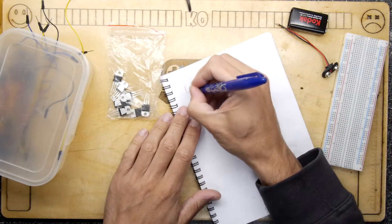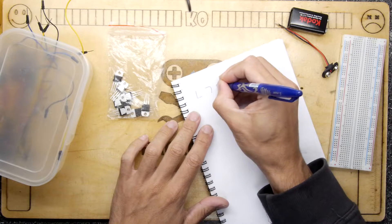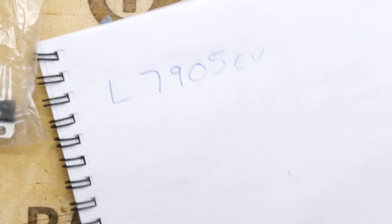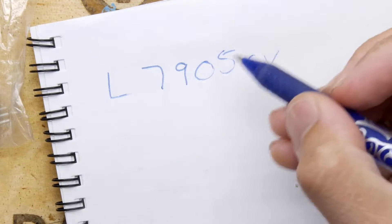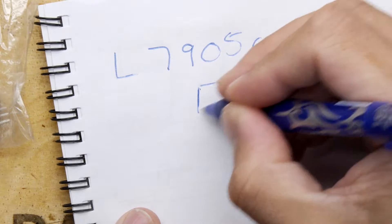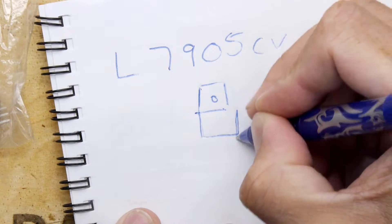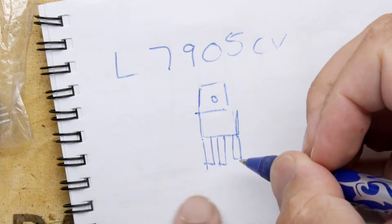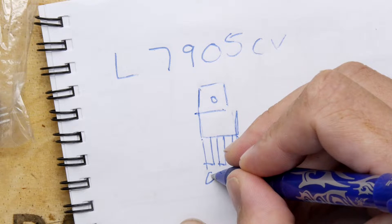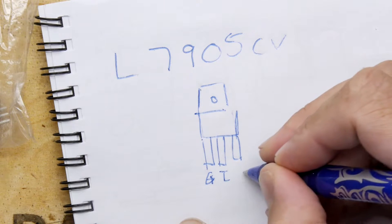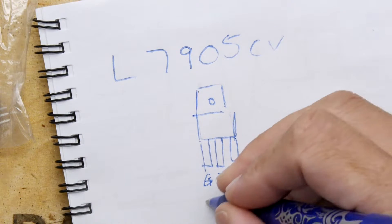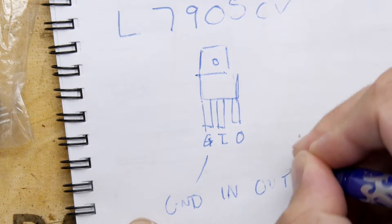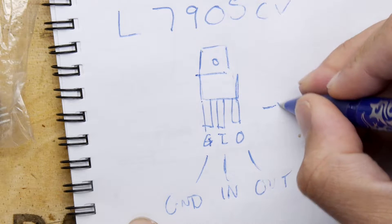To do this I'm going to use one of these, which is an L7905, particularly this one CV. I'll have to zoom in because my pen is running out. Just to show you the footprint of this, it's a standard package. It looks like any other voltage regulator, but rather than being input ground output, it's going to be ground, input, and output. This is known as a negative voltage regulator.